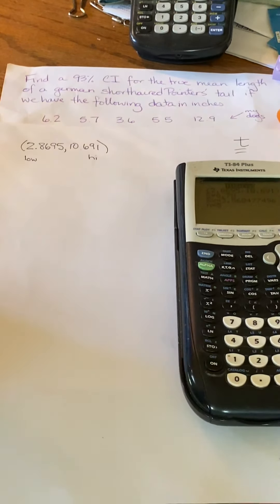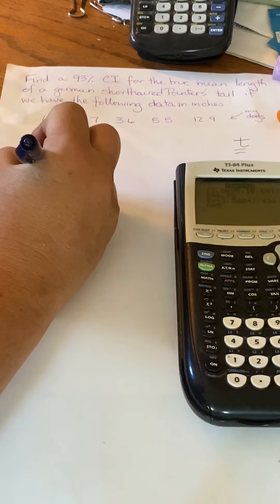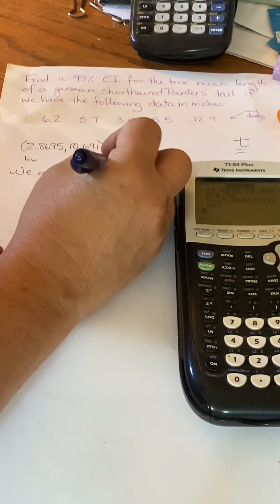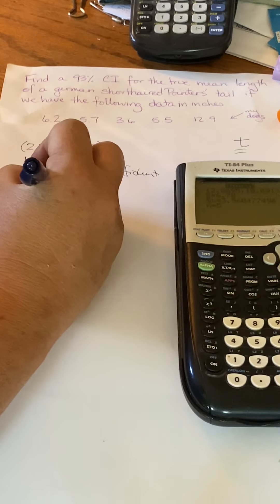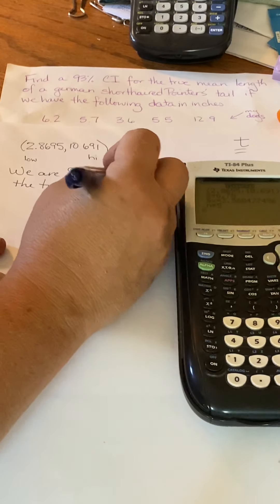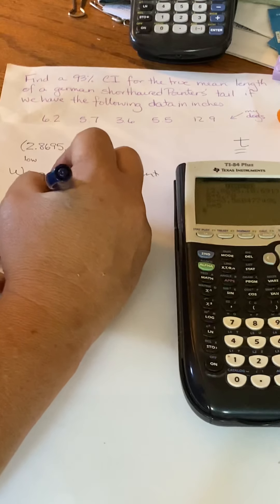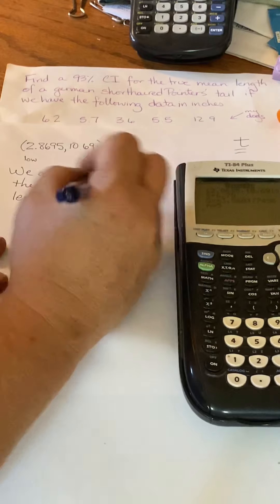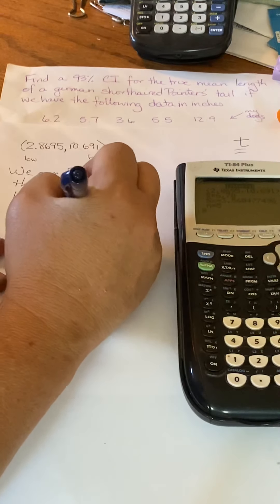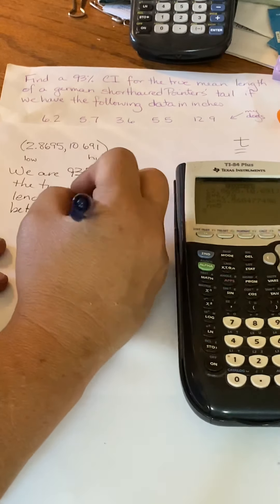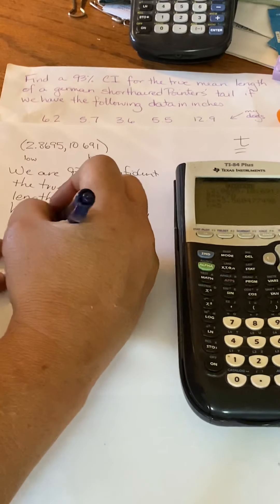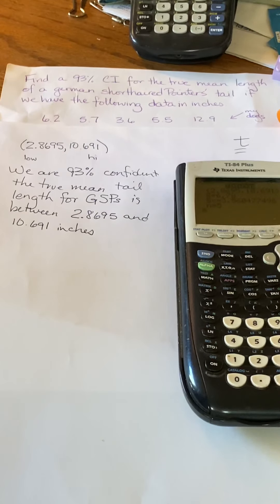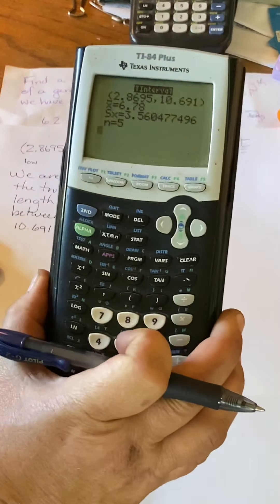But just like always, we definitely need our sentence. But we don't have to do really any math. We need a sentence. So we can say we are 93% confident the true mean tail length for German Shorthair Pointers, or GSPs, is between 2.8695 and 10.691 inches. And we have that with 93% confidence. And again, we let the calculator do all of those calculations for us.